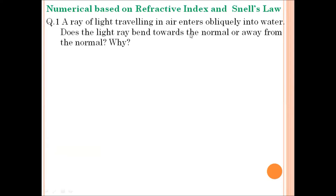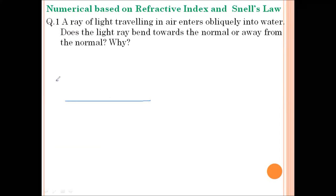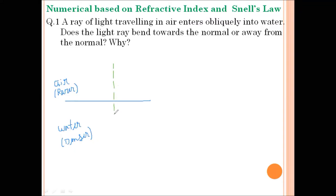Question number one: a ray of light in air enters obliquely into water. Does the light ray bend towards the normal or away from the normal, and why? We have been given a ray of light entering from medium air into medium water. Air is rarer, meaning the density of air is less than the density of water. If we draw a normal line and throw a ray of light at an angle i, since the ray is passing from a rarer medium to a denser medium, the speed of light will decrease when it enters water. Thus, the ray of light will bend towards the normal at an angle r.